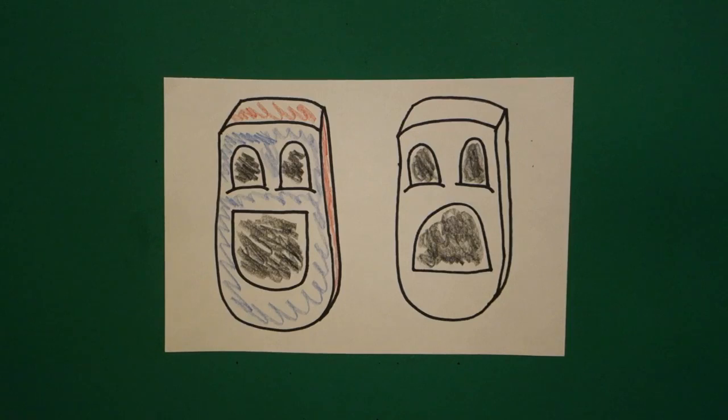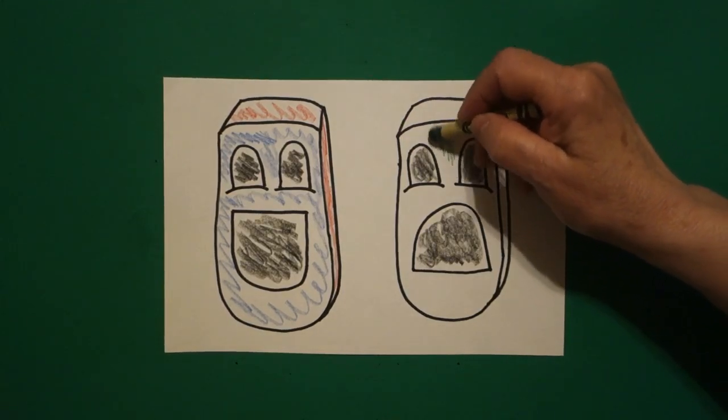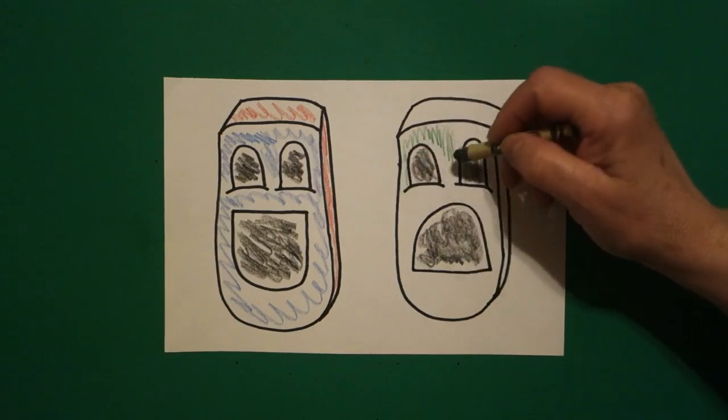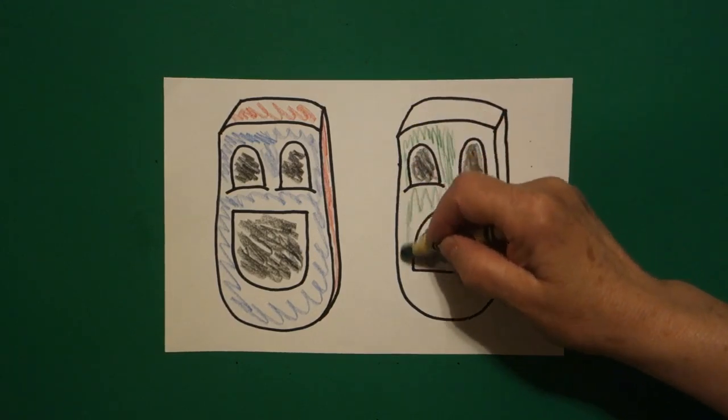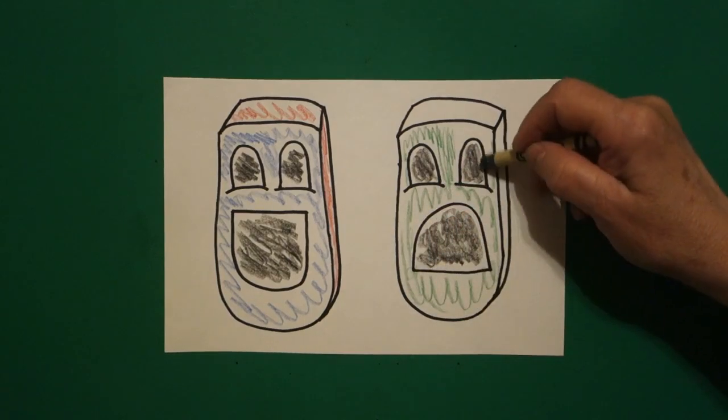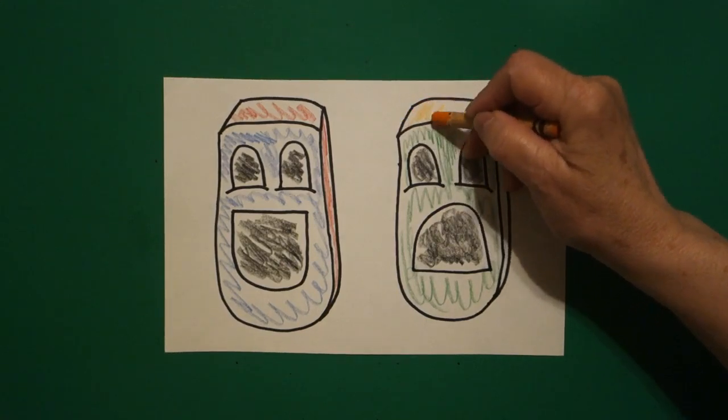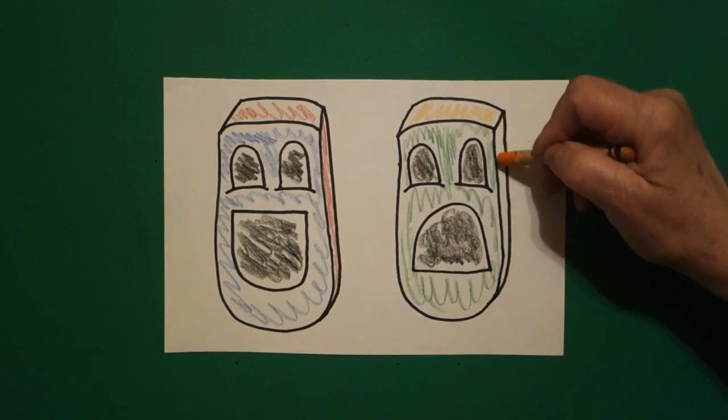Then to counterpoint, I did my tragedy mask green all the way around, up and around. And for my contrasting color, I did orange.